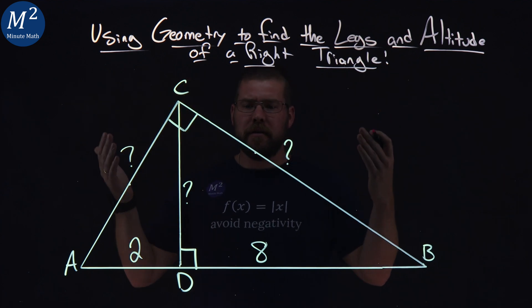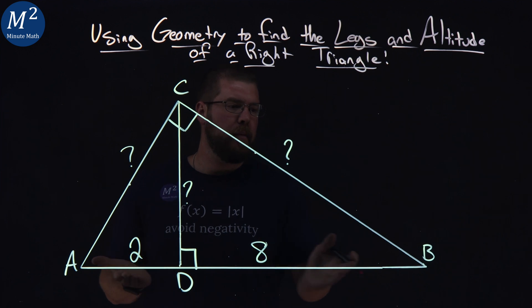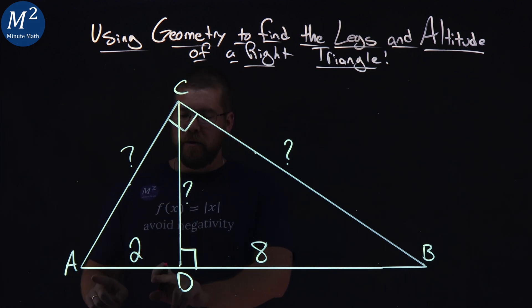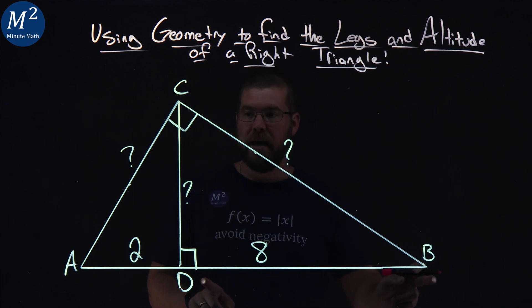We're going to use the geometry here to find the legs and altitude of a right triangle. Our figure here is a right triangle with a hypotenuse laying on the bottom, and we have little lengths written here, 2 and 8. AD is 2, DB is 8.